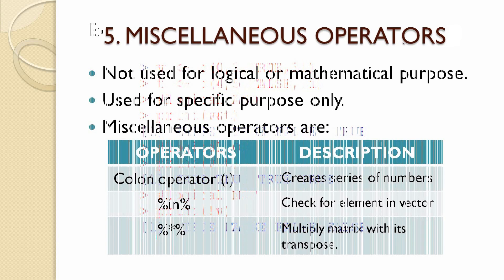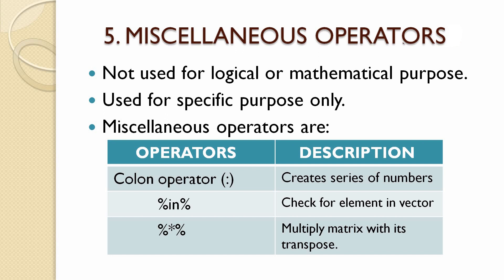Moving on to the next operator: miscellaneous operators. These operators are not used for logical or mathematical purposes — they are only meant for specific purposes. In R, there are three types: the colon operator, which creates a series of numbers between two values; the %in% operator, which checks whether an element is present in a vector; and the %*% operator, which multiplies a matrix with its transpose.